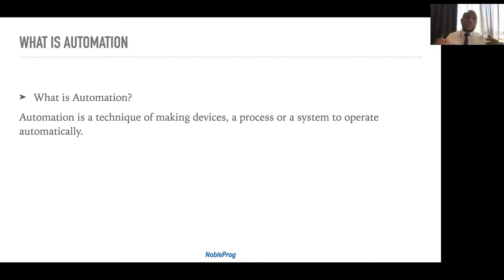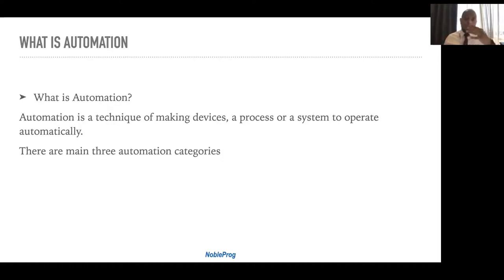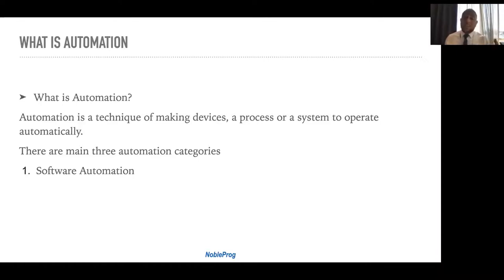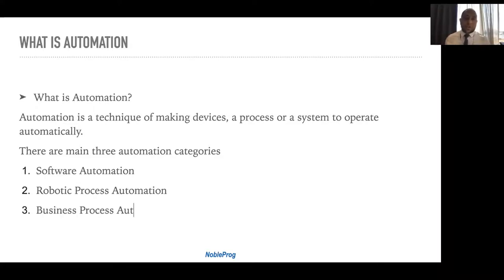RPA is just one kind or technique of automation. In general, we have three main categories of automation: software automation, robotic process automation (RPA) — which is our main focus — and business process automation.